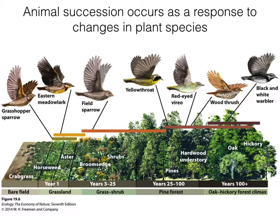It's important to note that together with changes in plant species abundances and composition, animal succession occurs as well — as a response to changes in plant species composition and abundance. This graphic illustrates that, showing a plant community over successional time from a bare field through grasslands, grasses, shrubs, pine forests, and eventually the climax community of oak-hickory forests, where vastly different species support very different types of animal communities.